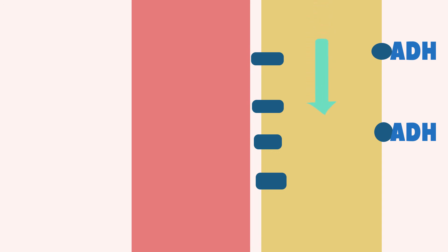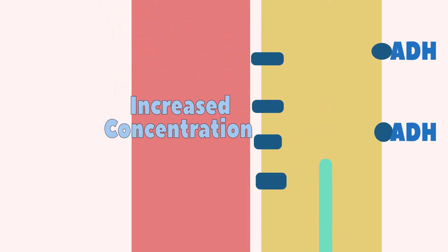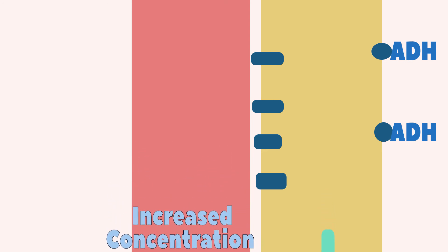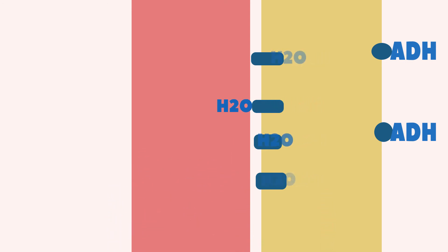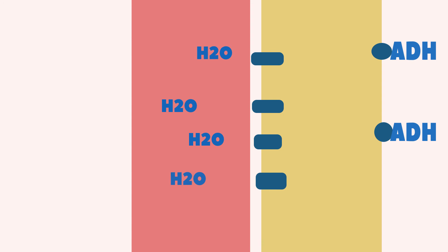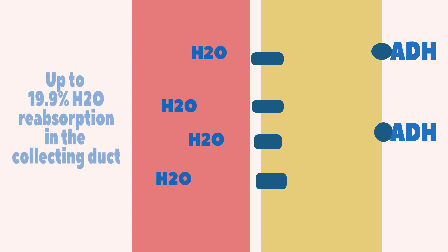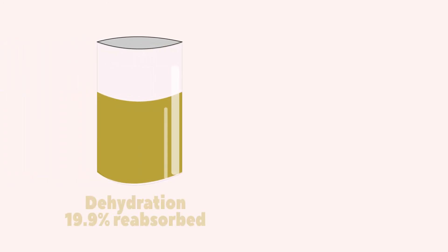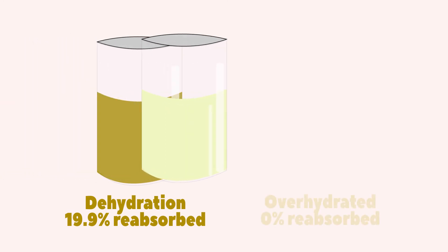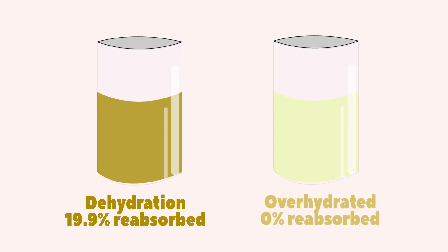As the pre-urine descends through the collecting duct, deeper and deeper into the renal medulla, it will encounter more and more concentrated interstitium. Remember, the corticomedullary gradient was built by the loop of Henle. So depending on the body's needs, up to 19.9% of the remaining 20% of water in the pre-urine can be reabsorbed. If you are dehydrated, then closer to 19.9% will be reabsorbed. If you are over-hydrated, then closer to 0% will be reabsorbed.